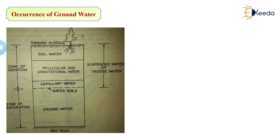The two main zones are the zone of aeration and zone of saturation. The zone of aeration consists of: first, the soil water zone; second, the intermediate zone containing gravitational water; and third, the capillary zone which consists of capillary water. From the water table up to the bedrock or impervious layer, we have the zone of saturation.